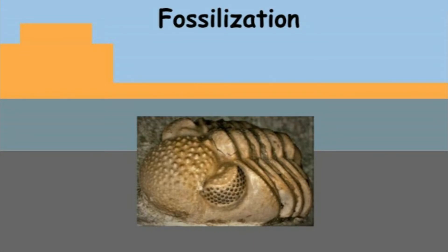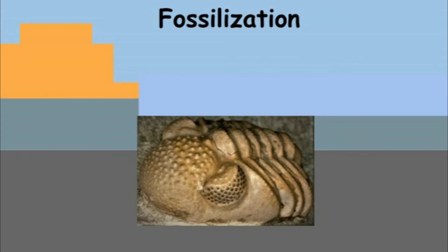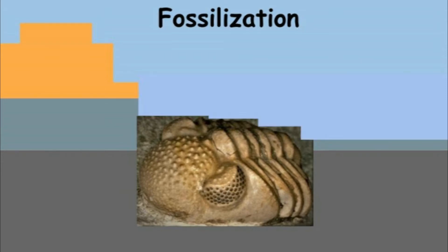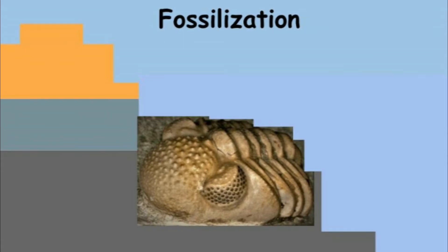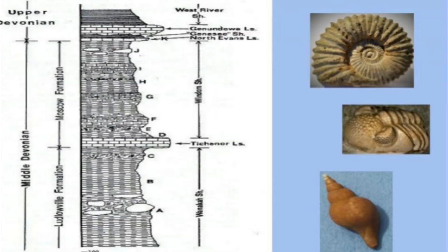If there is uplift — if land that was once underwater is now above water — the land will eventually start to break down again. Above water, things tend to weather away; below water, things tend to be deposited. When it's above water, weathering exposes the fossil at the surface. If a person is lucky, they might spot the fossil as it weathers out or identify a location where fossils can be found by digging through exposed layers. Paleontologists and fossil enthusiasts map these layers to understand what fossils can be found in locations with rocks from particular ages.